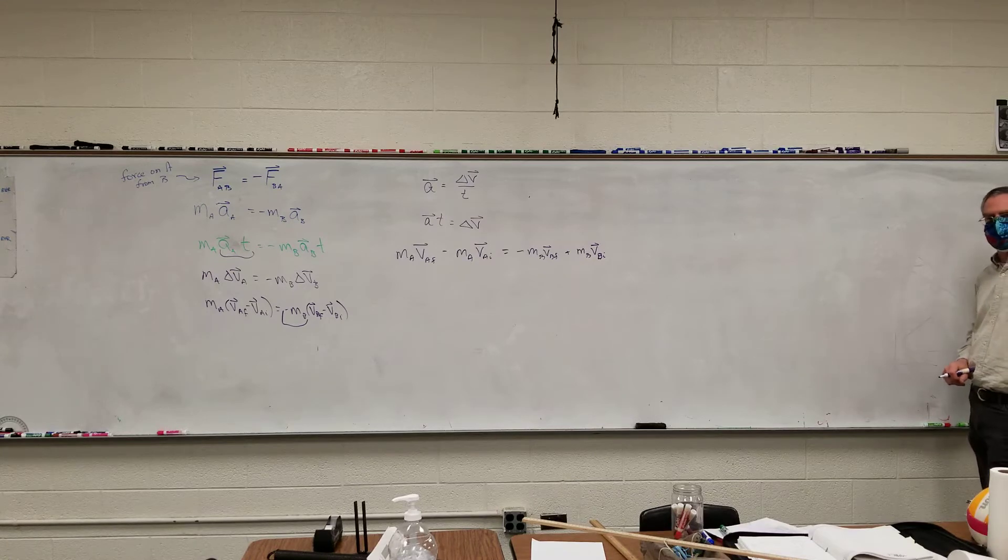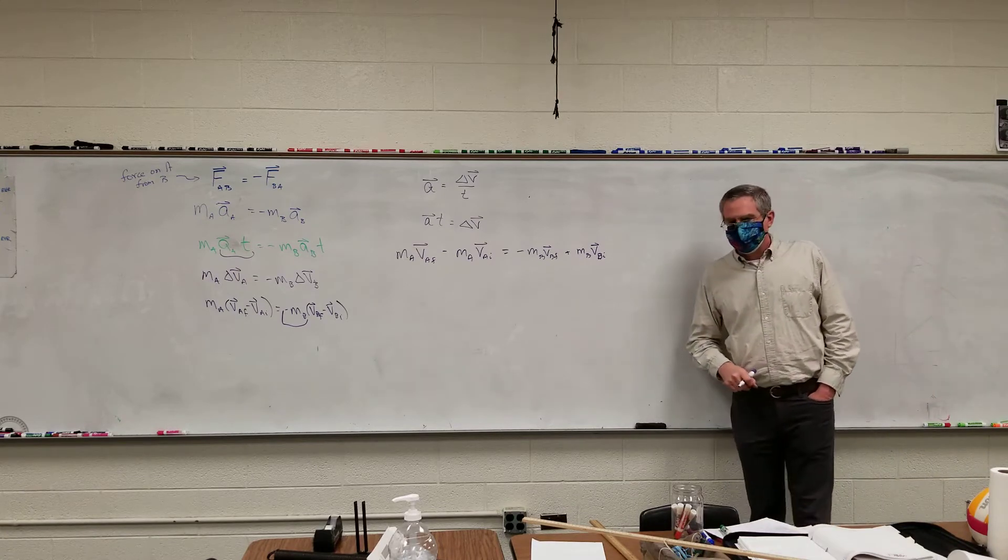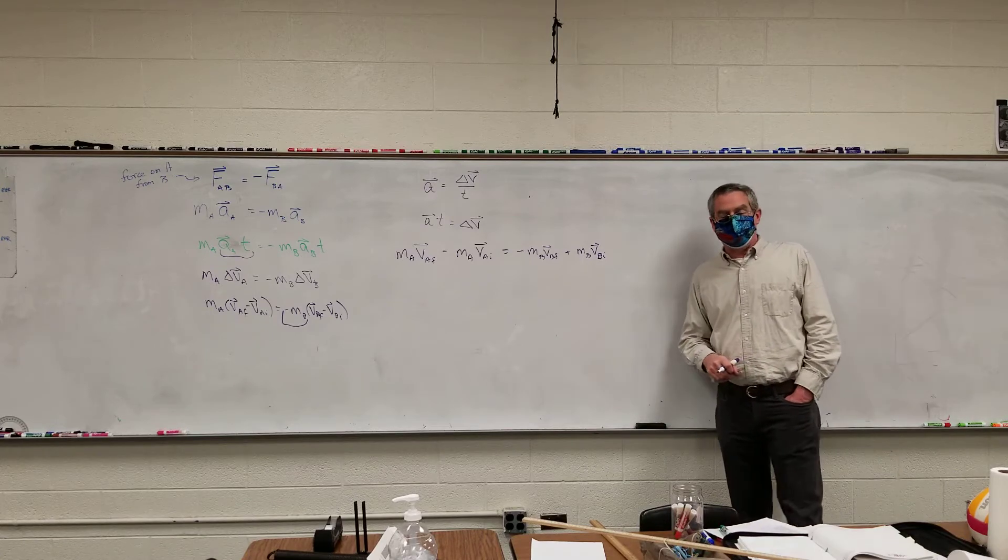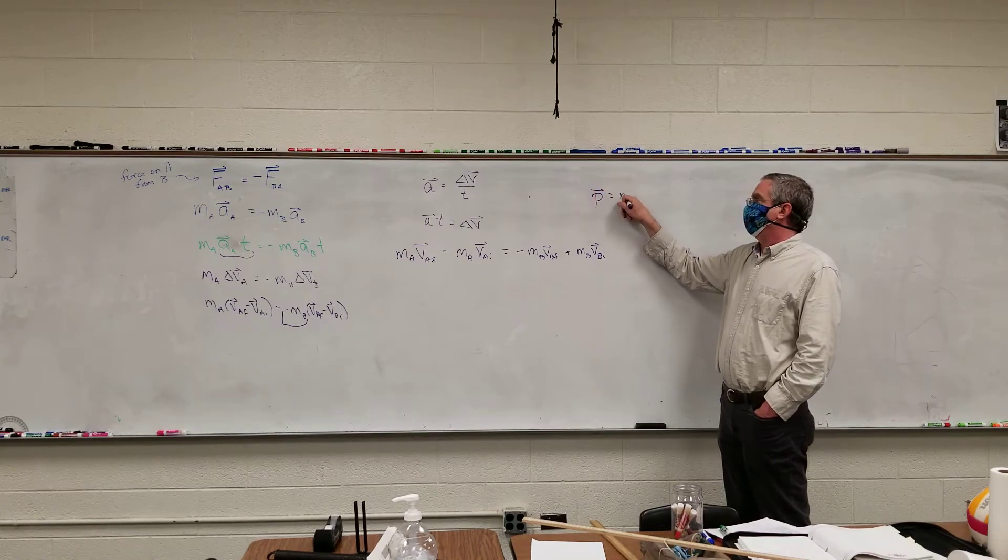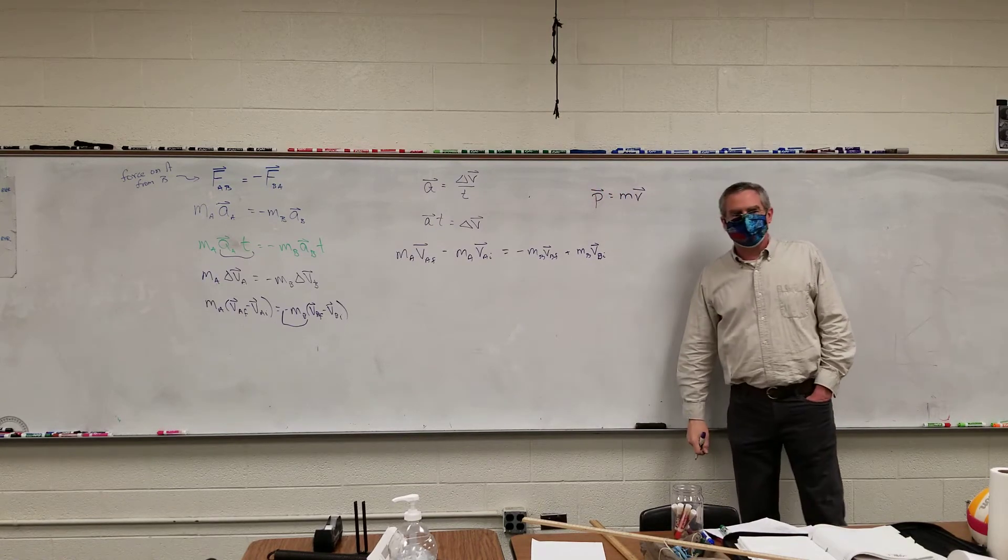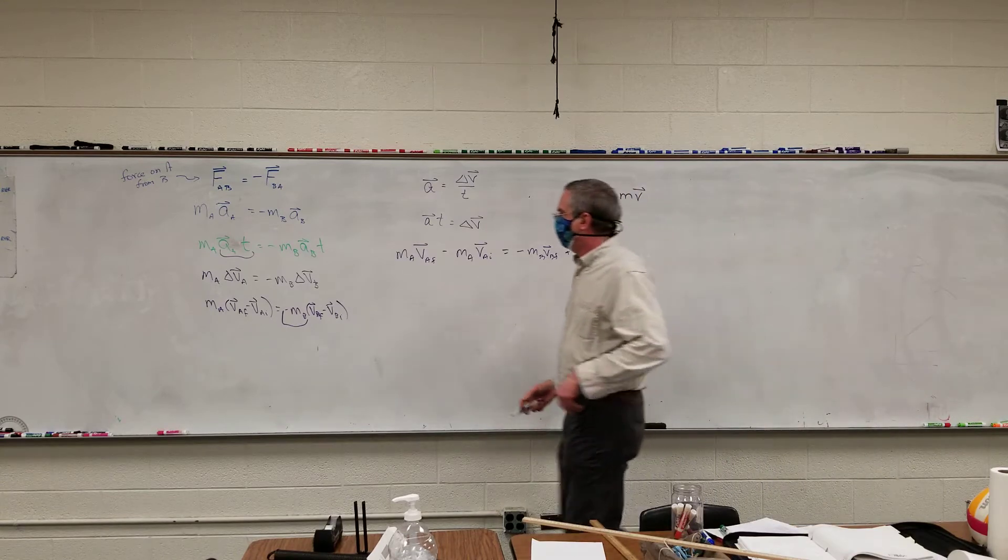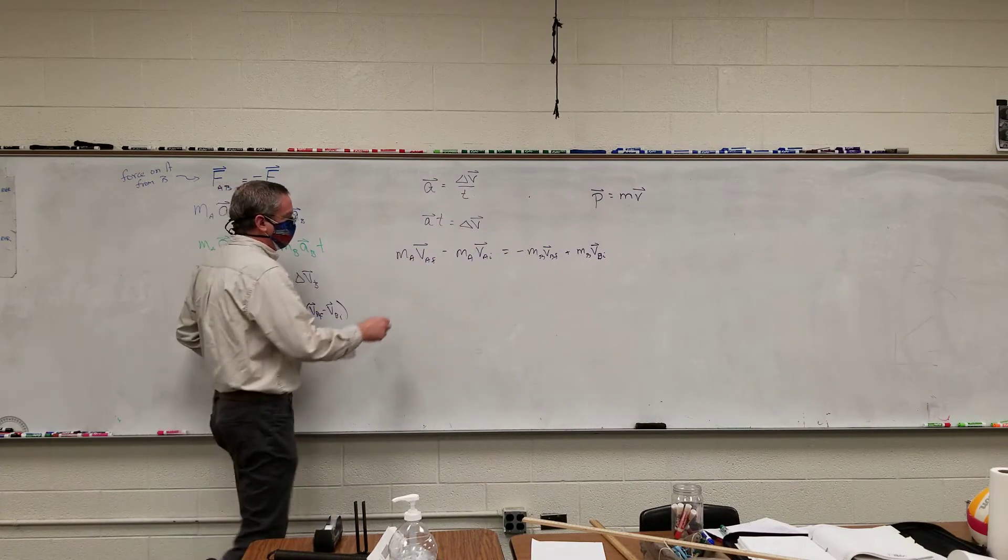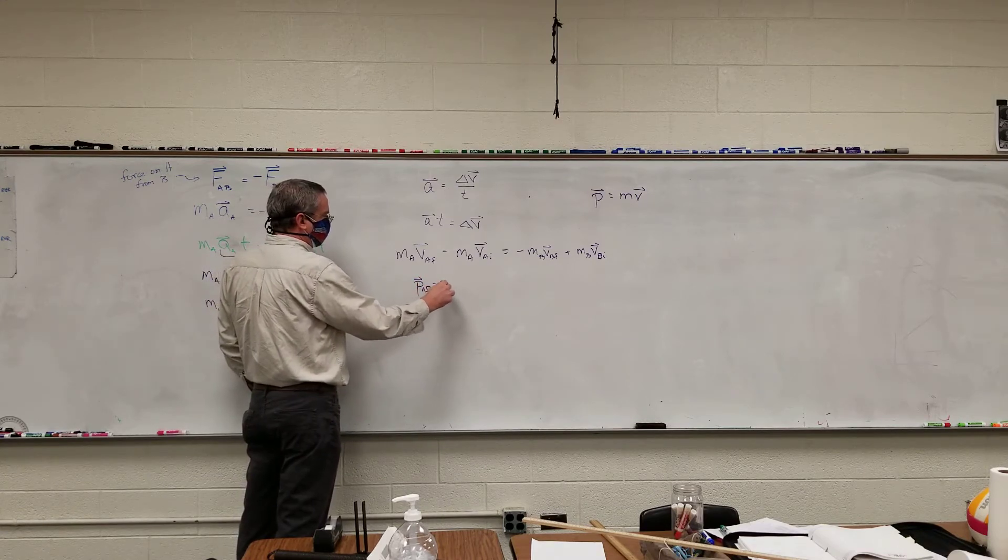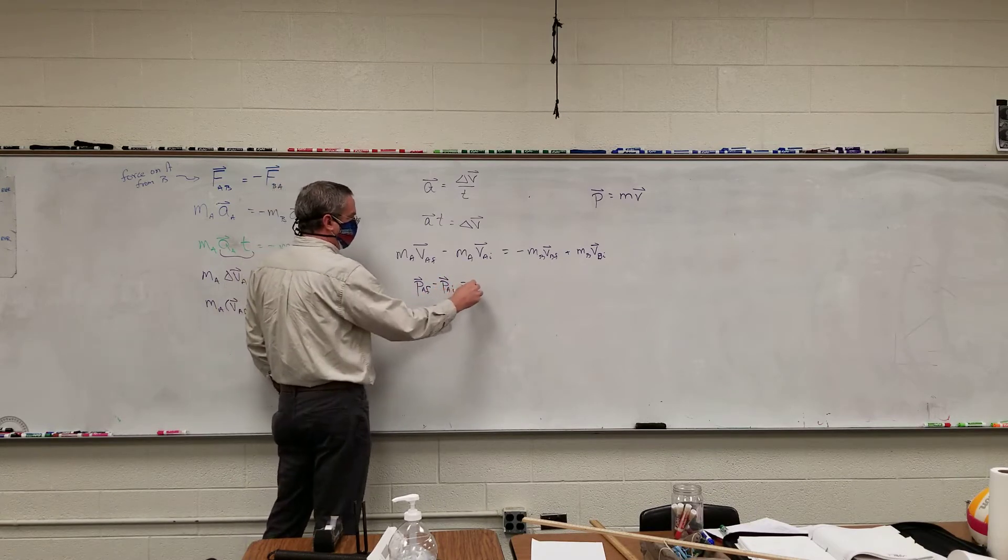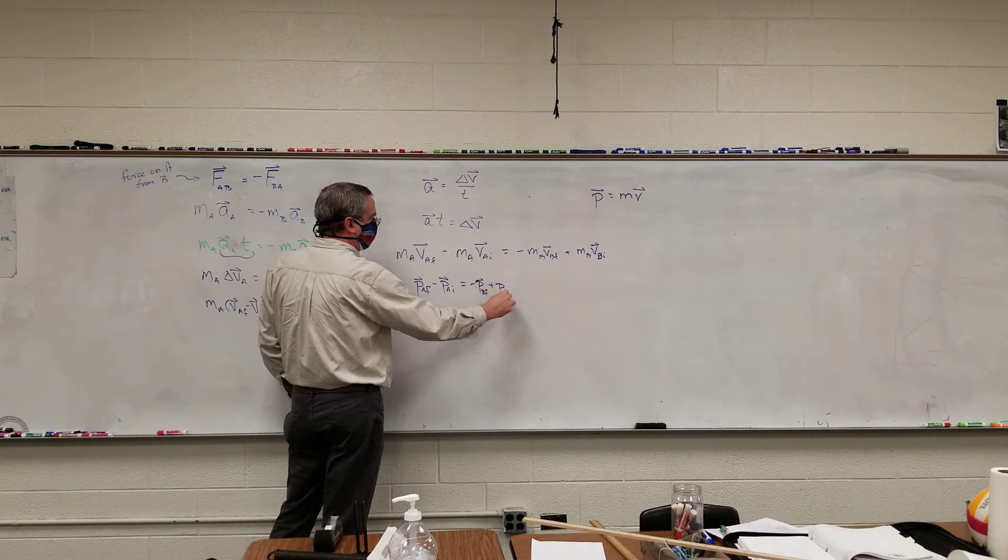At this point, we get tired of writing. So, physicists look at this and say, well, mass times velocity shows up four times here. So, let's come up with something for that. And so, hey, why not? Let's use the letter P. Because... Why not? I think René Descartes is the one responsible for that one. So, this becomes this quantity P_A final minus this quantity P_A initial is equal to the negative, this quantity P_B final, plus P_B initial.